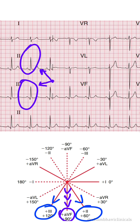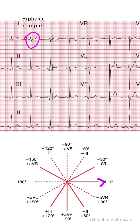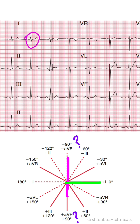Trick number 2: you find a lead out of these 6 limb leads which has a biphasic complex. The mean QRS axis is simply oriented at a right angle — that is, 90 degrees — to any lead which shows a biphasic complex. Obviously, 90 degrees can be either on this side or that side, that is plus 90 or minus 90. This can simply be decided by looking at which perpendicular lead has a positive deflection. Then, obviously, the mean QRS axis is directed towards that side.